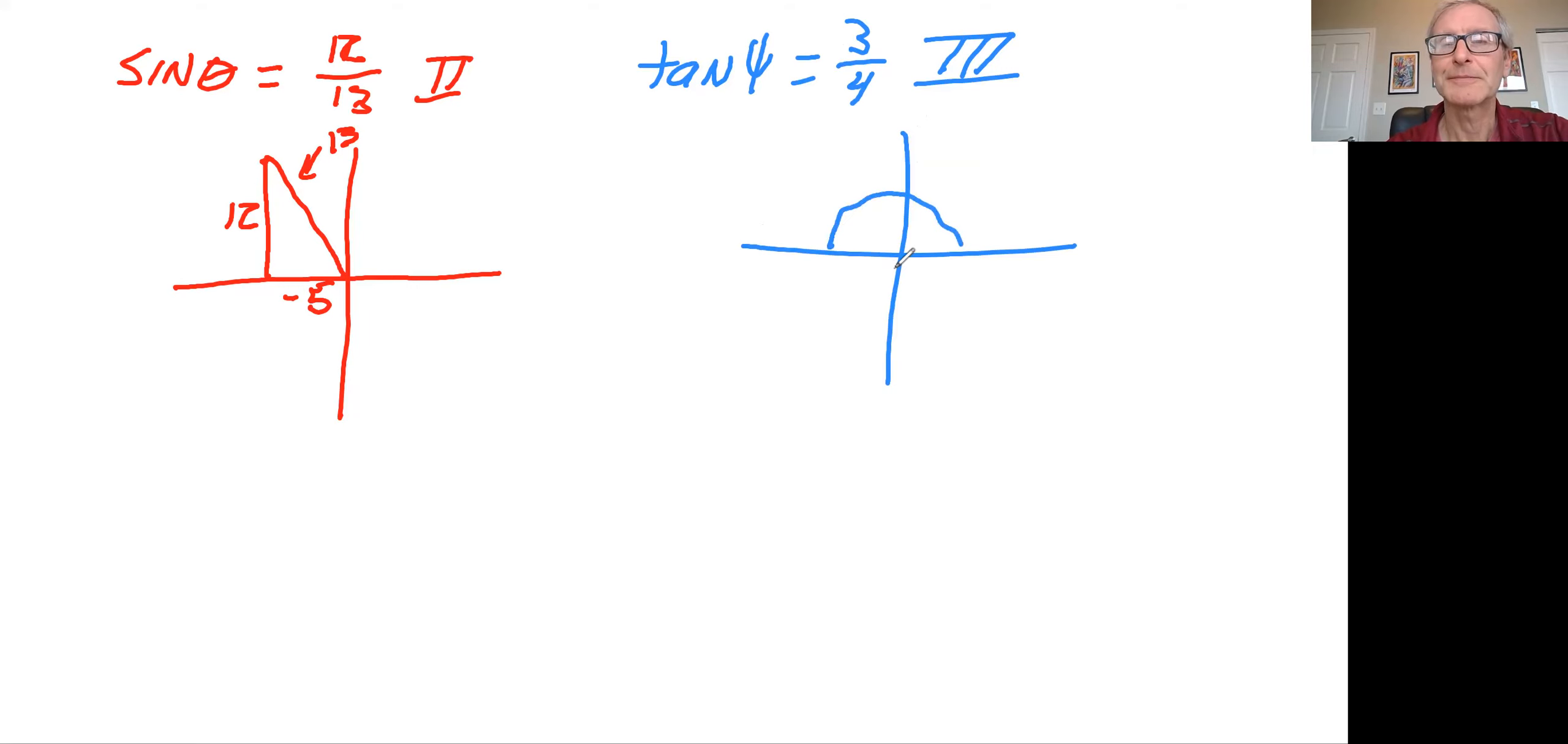And remember tangent is opposite over adjacent. So if we generate this hypotenuse here, here's our angle. So this would be opposite, so that would be four. And here it would be three. But because we're in quadrant three you see this has to be a minus and this has to be a minus.